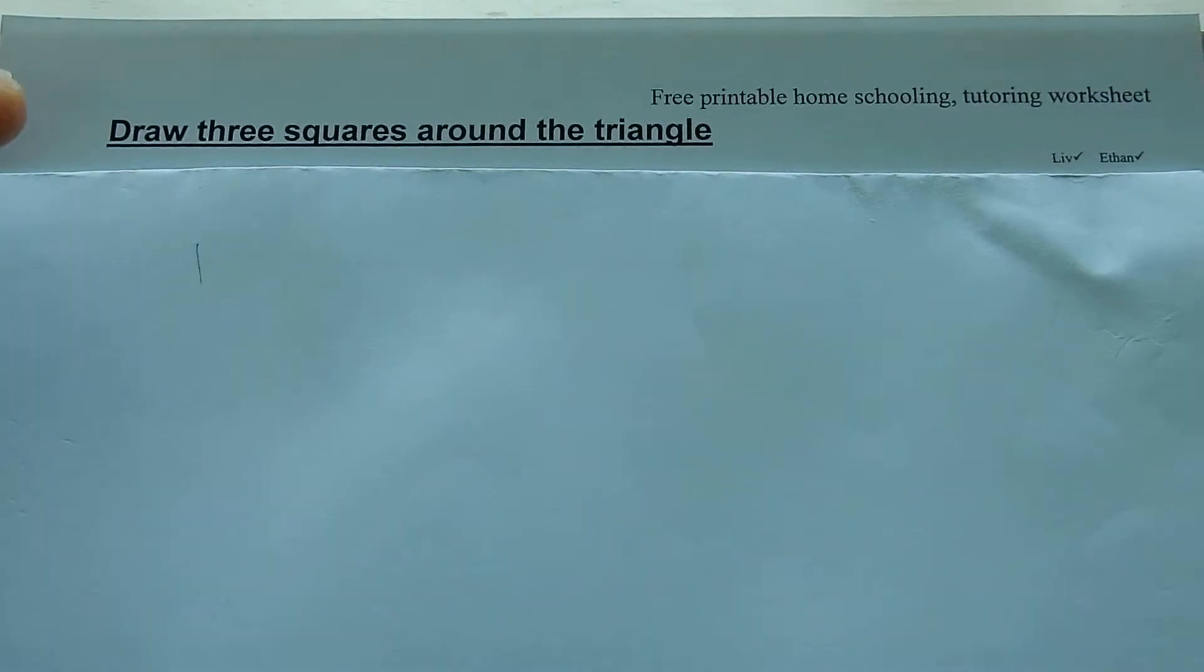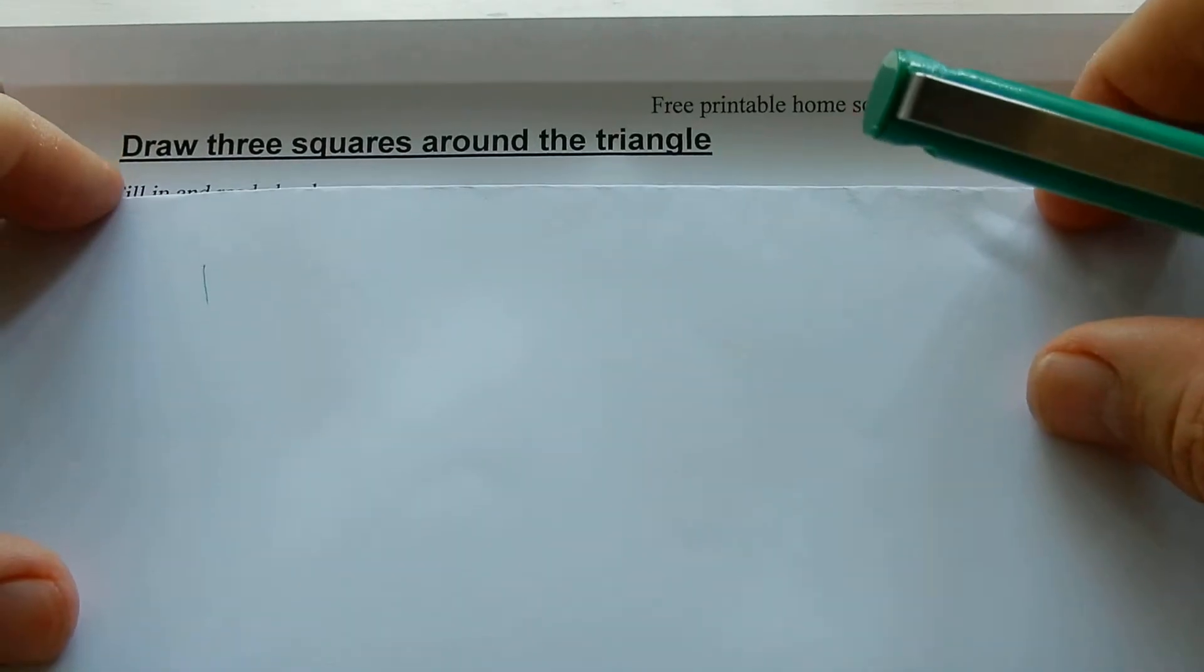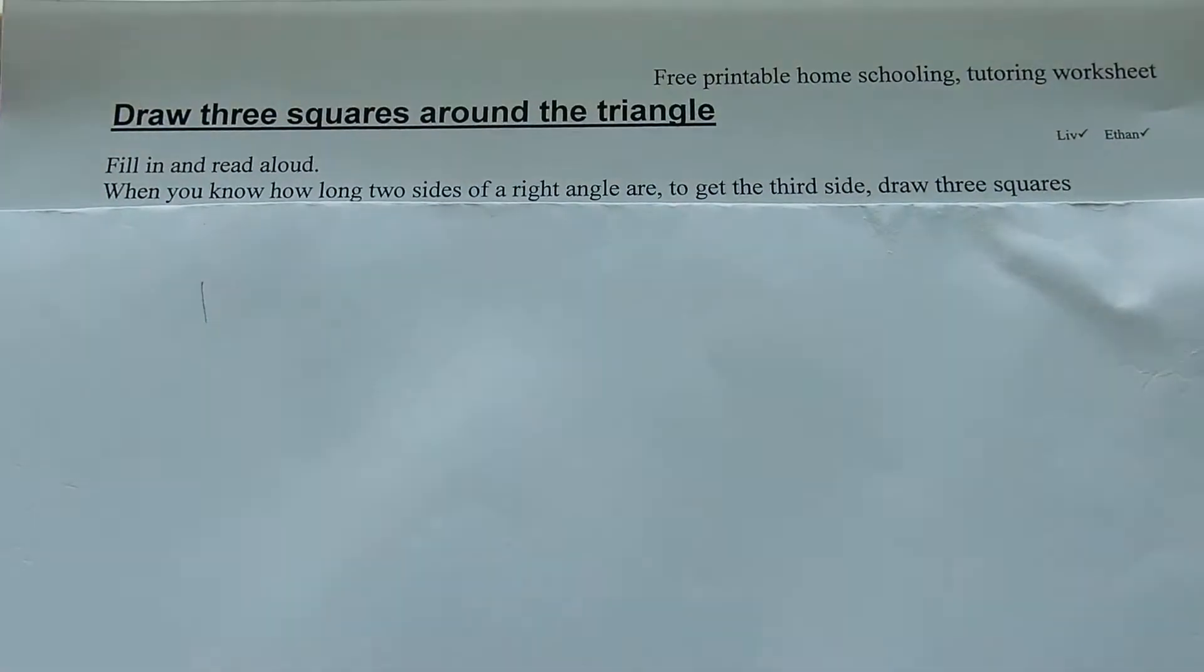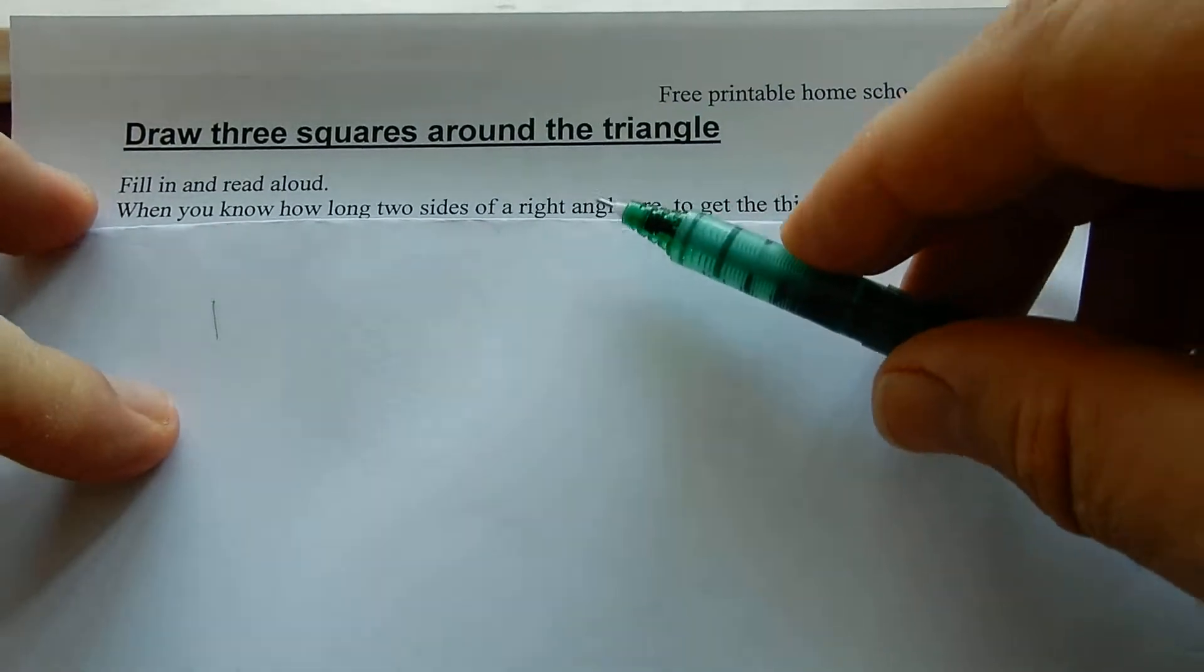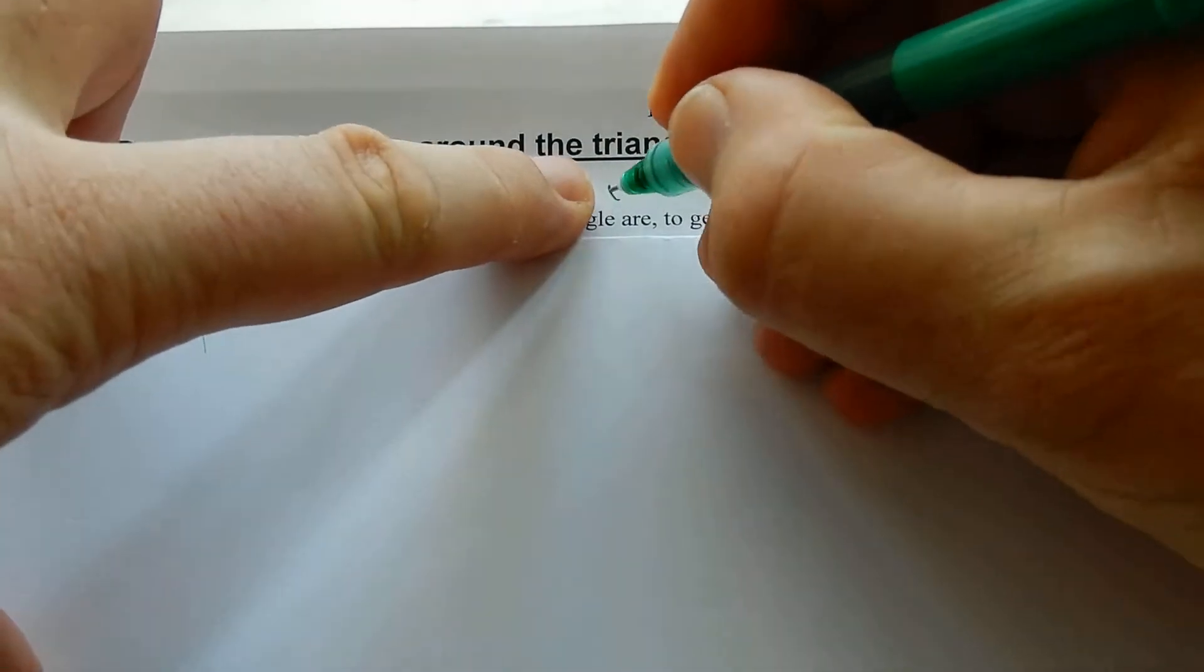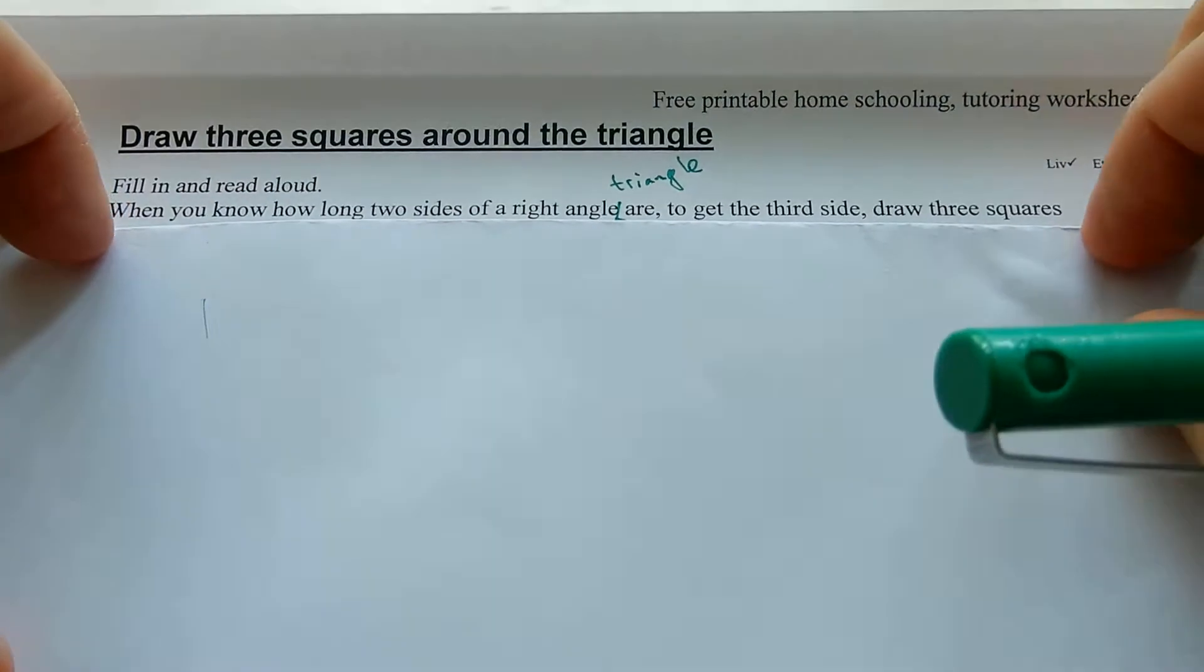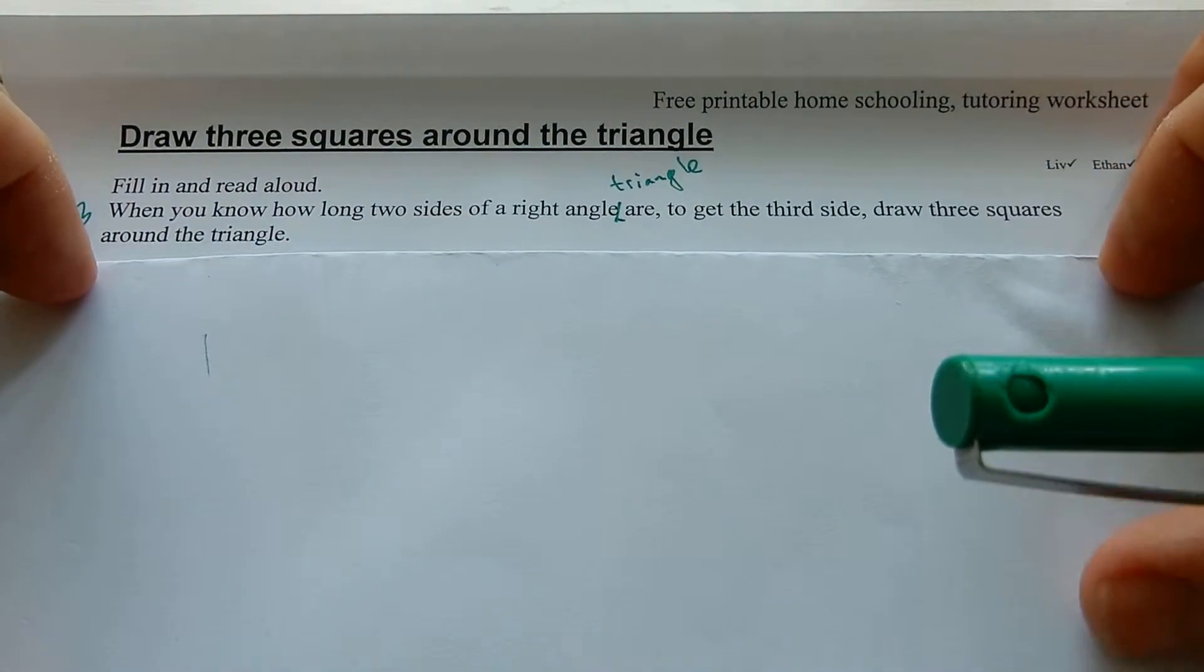Pythagoras! Draw three squares around a right angle triangle or around the triangle. When you know how long two sides of a right angle are to get the third side, draw three squares around the triangle.